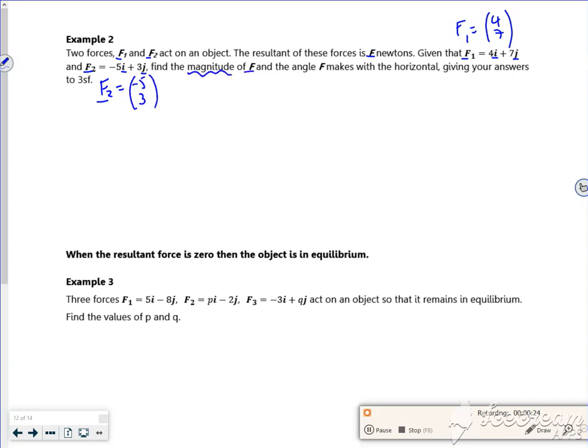Right then, so the magnitude - well, first of all, let's work out the resultant force. So that's just going to be F1 plus F2. So my resultant force will be (4, 7) plus (-5, 3). You could draw the diagram. So that's (-1, 10).